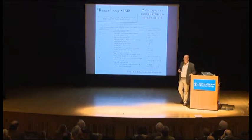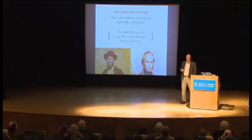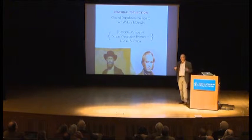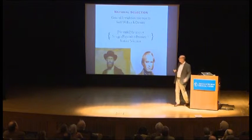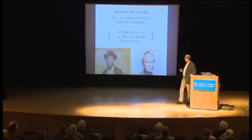Of course, he didn't name it — 'natural selection' was Darwin's term, which Wallace never fully liked. The general formulation is the same in bold strokes: heritable variation, struggle or population pressure — Wallace later said he too had thought about Malthus, like Darwin. Whether or not that's true, this idea of population pressure, struggle, and differential survival and reproduction syllogistically gives you a selection dynamic, which Darwin dubbed natural selection.